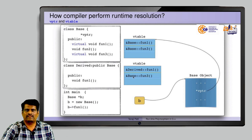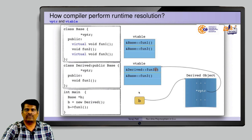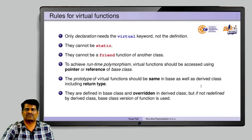In main, we use a base class pointer and create an object of derived class with new derived. The vptr now points to the vtable of the derived class. When pointer b calls function 1, it follows b to the vptr, reaches the vtable of derived class, and function 1 from the derived class is invoked. Though pointer b has data type base class, it is still calling the function from the derived class.